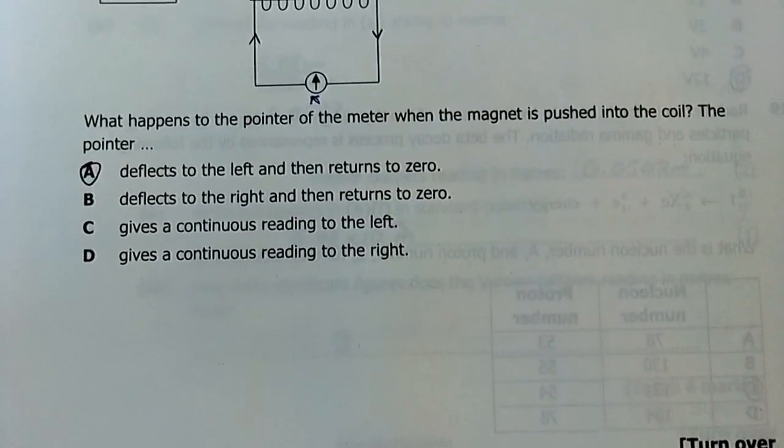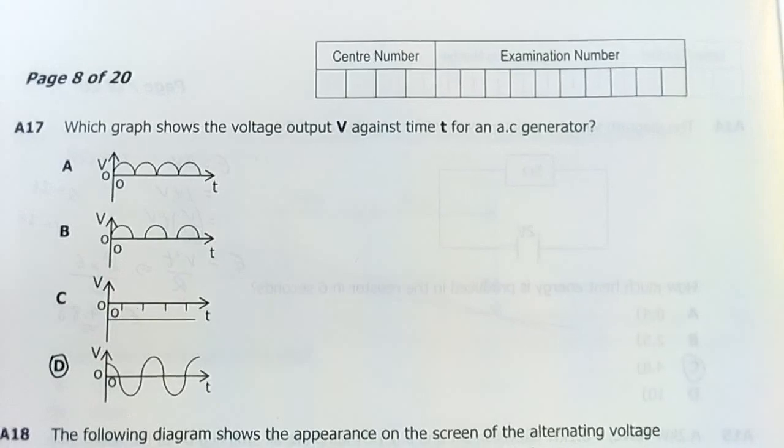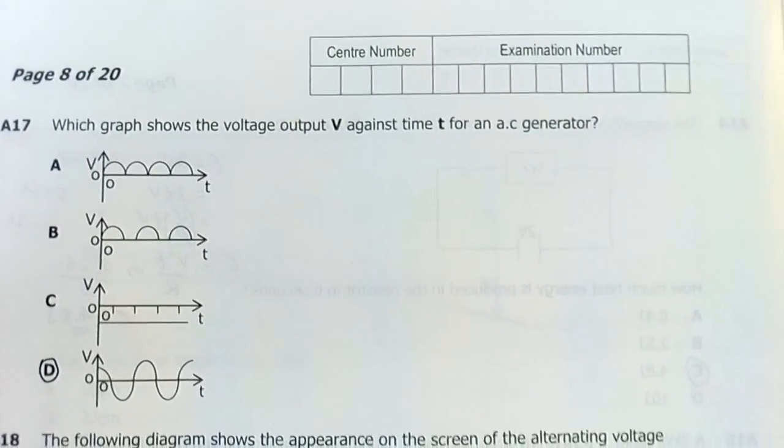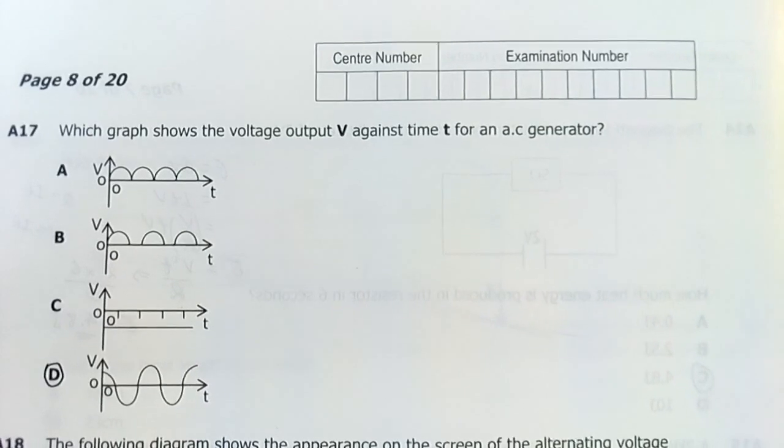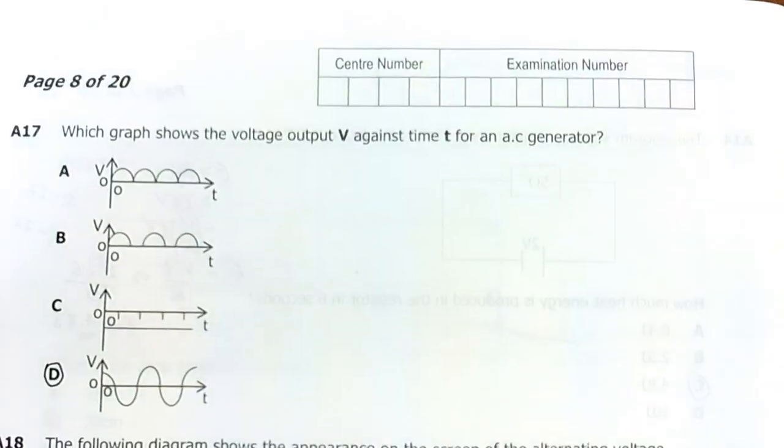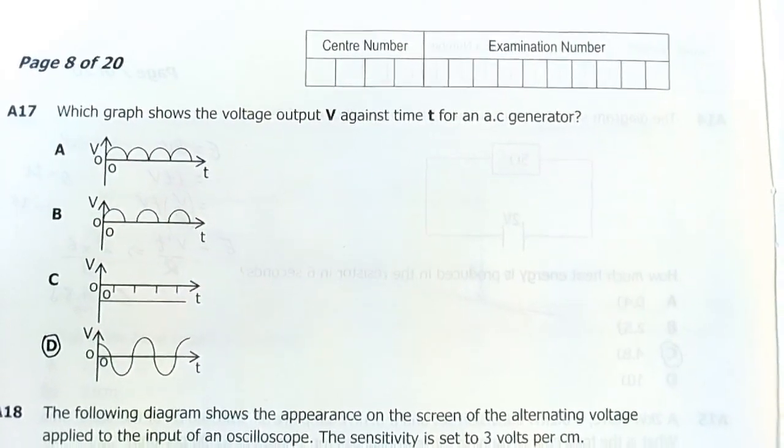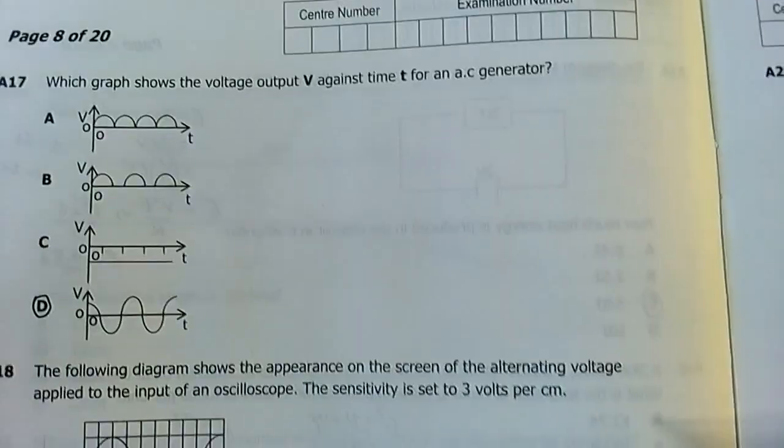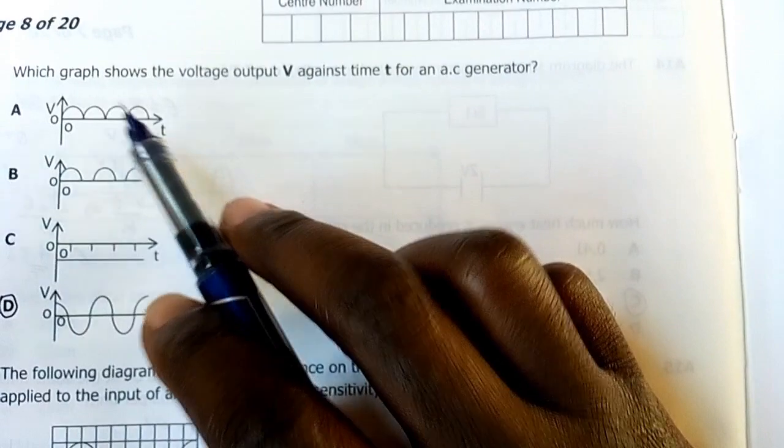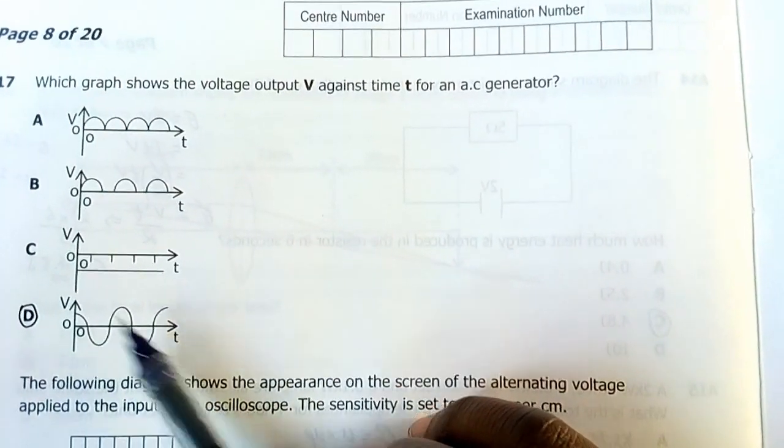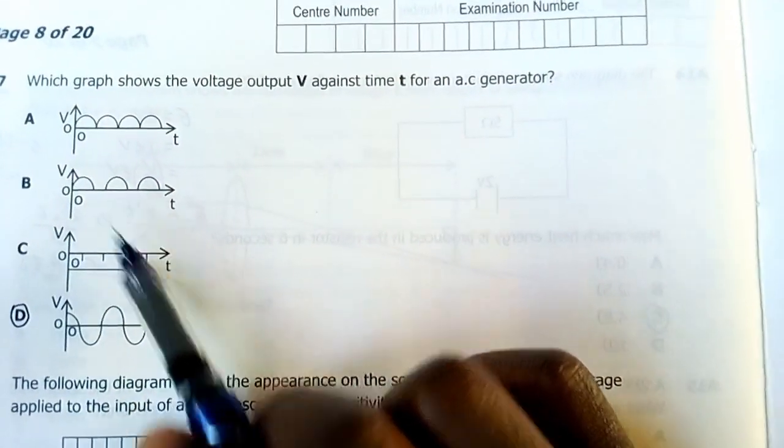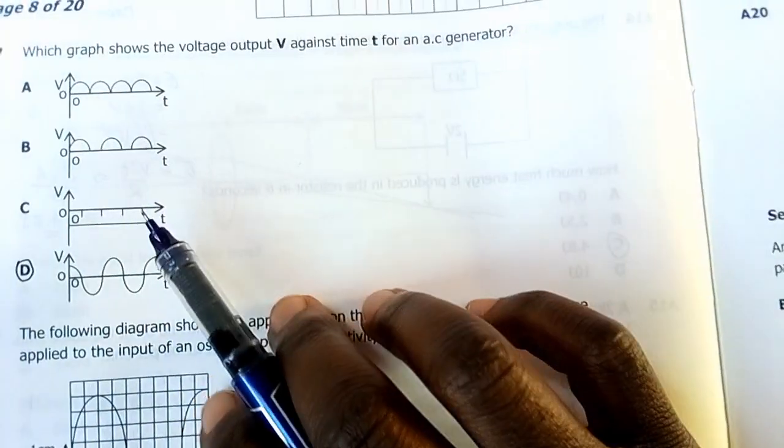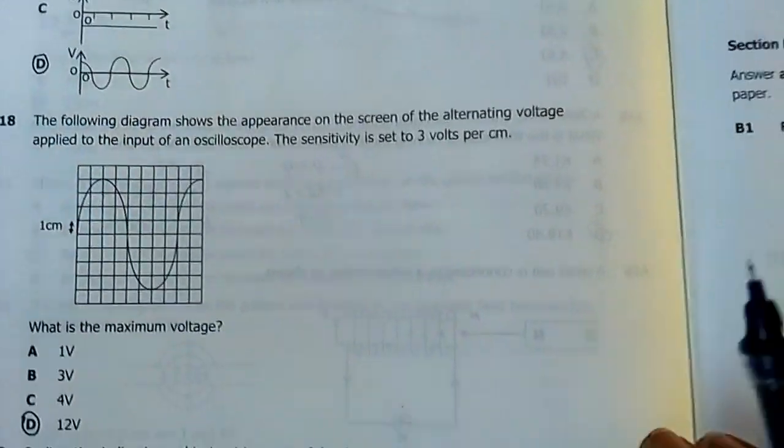Question 17: Which graph shows the voltage output v against time for an AC generator? The answer is D. It appears like a sine graph. In your mathematics, this one is a DC generator, this one is an AC generator. This one looks like a graph for a rectifier. This one I don't know man, it's from Mars.